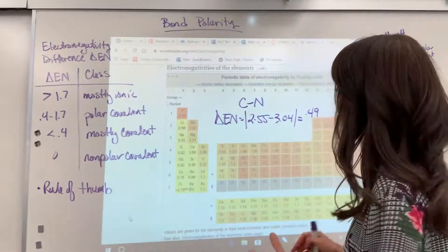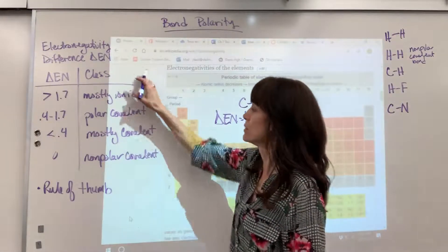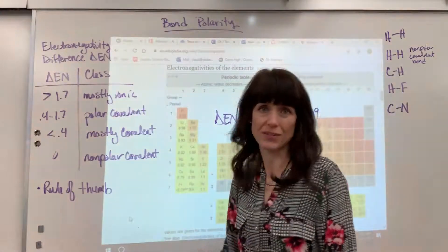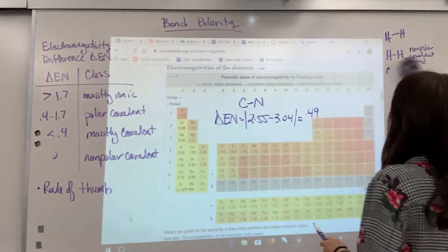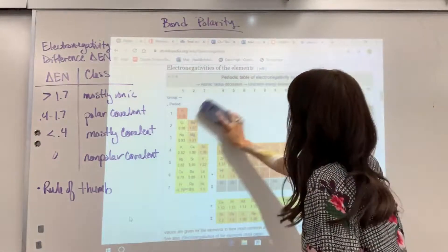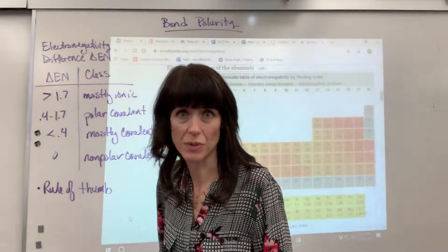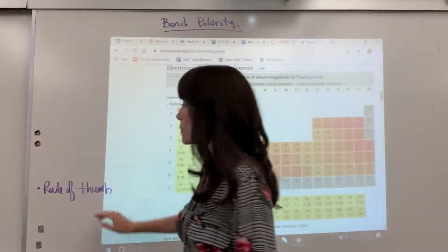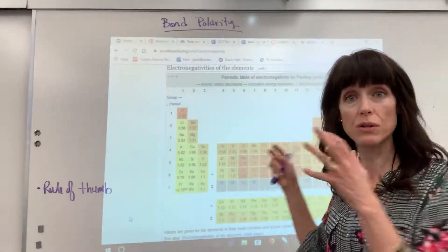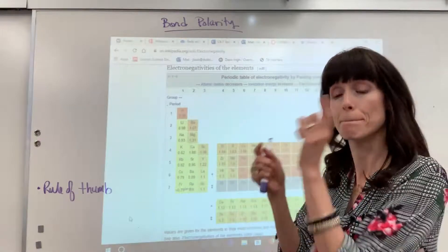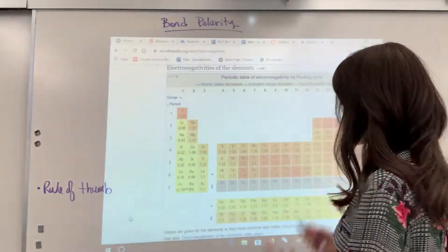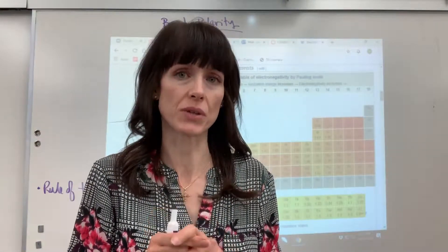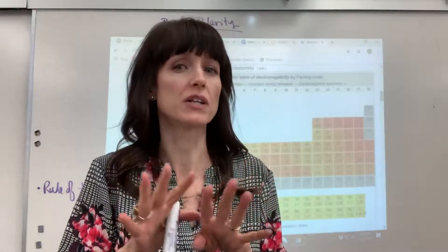To summarize: reading a Linus Pauling electronegativity chart and using a classification table is straightforward — take the two atoms in the bond, subtract their electronegativities, and look up the classification. But most of the time you won't have a Linus Pauling chart or classification table, and you'll need to say whether something is polar or nonpolar. Here's the rule of thumb: if the two atoms are next to each other on the periodic table, their electronegativities are so similar that the bond is nonpolar.